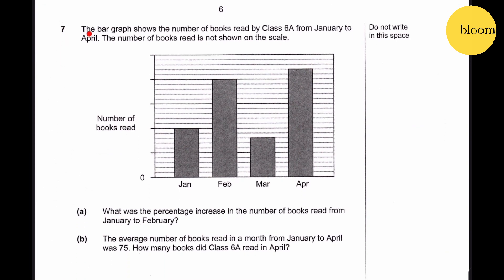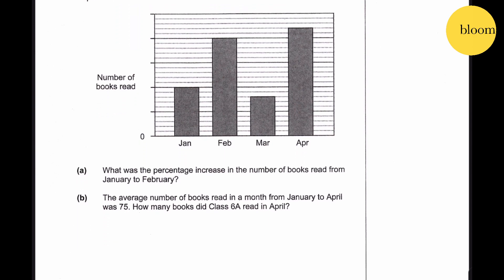Question 7: The bar graph shows the number of books read by class 6A from January to April. The number of books read is not shown on the scale. Question 7a: What was the percentage increase in the number of books read from January to February? January has 2 big scale markers and February has 4 big scale markers, so we know the increase is 100%.